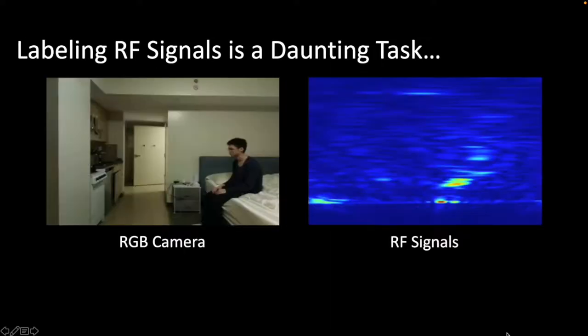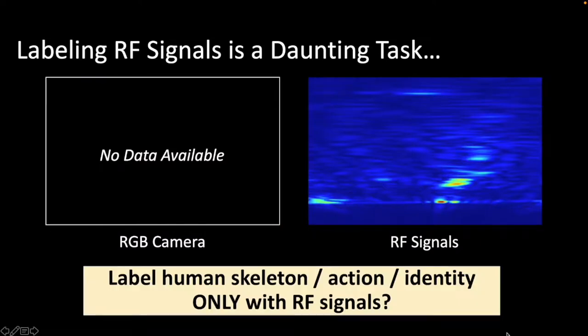However, unlike RGB datasets, labeling RF datasets is a daunting task because such signals are not human interpretable. To label RF data, a synchronized human-interpretable stream like video must be presented to assist the annotator. However, using RGB data as assistance could only label a small portion of the RF data.